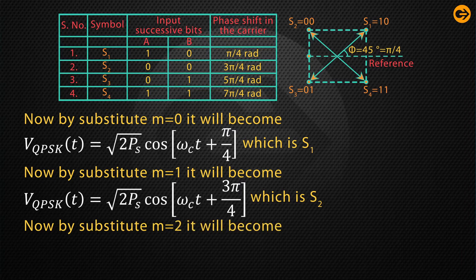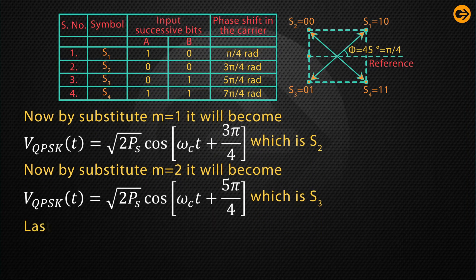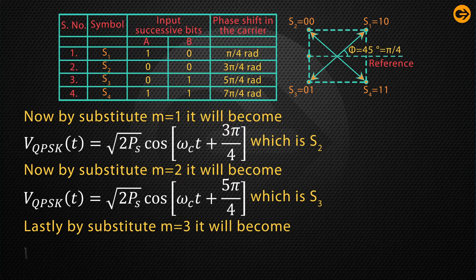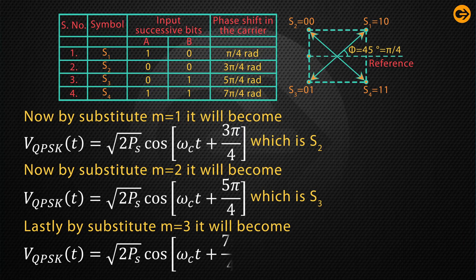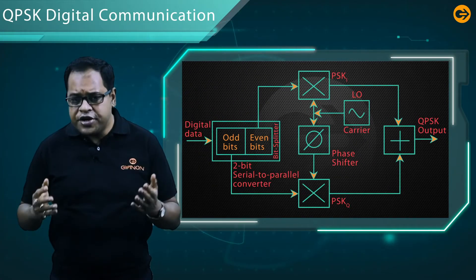By substituting m = 2, it becomes V_QPSK(t) = √(2Ps) · cos(ωc·t + 5π/4), which is S3. Lastly, by substituting m = 3, it becomes V_QPSK = √(2Ps) · cos(ωc·t + 7π/4), which is symbol S4. Now let us discuss the transmitter or modulator of QPSK.